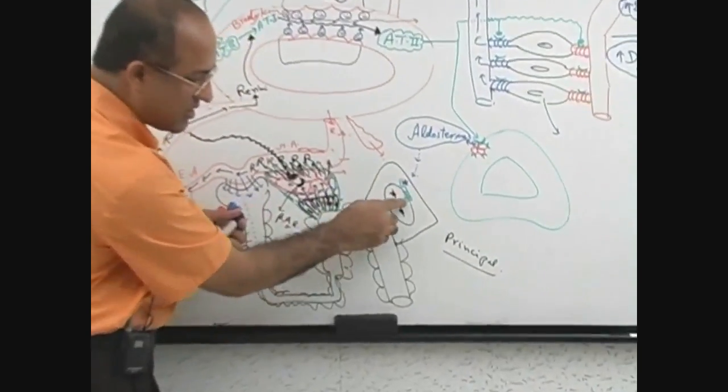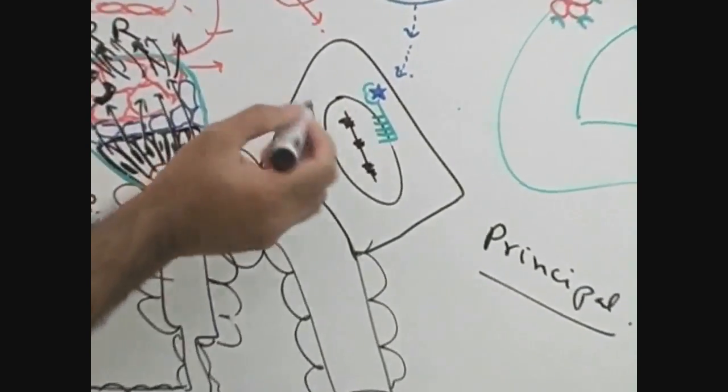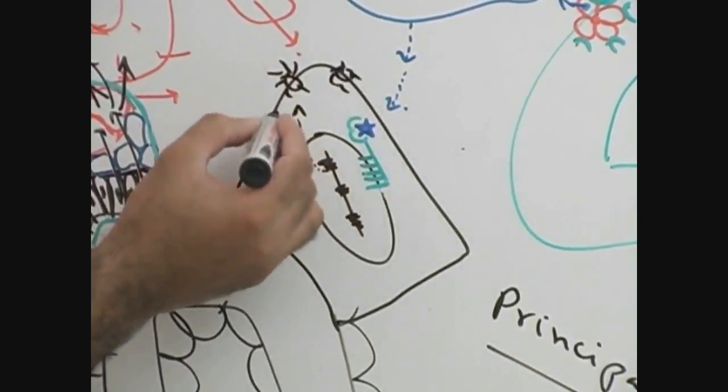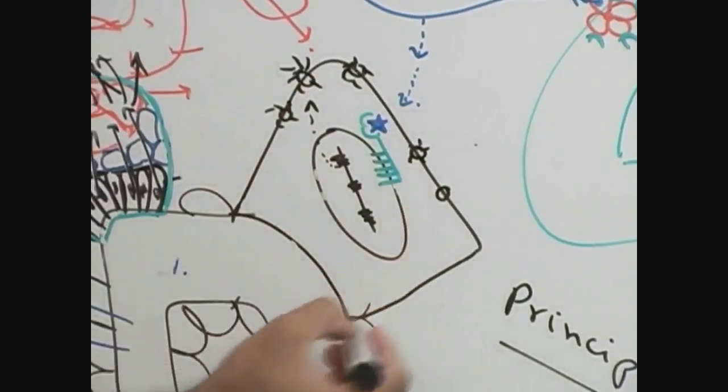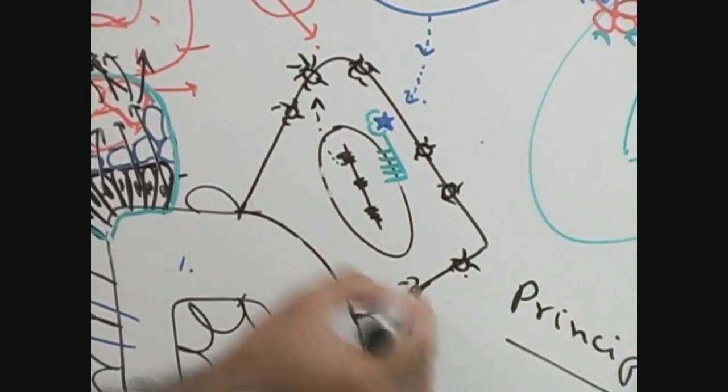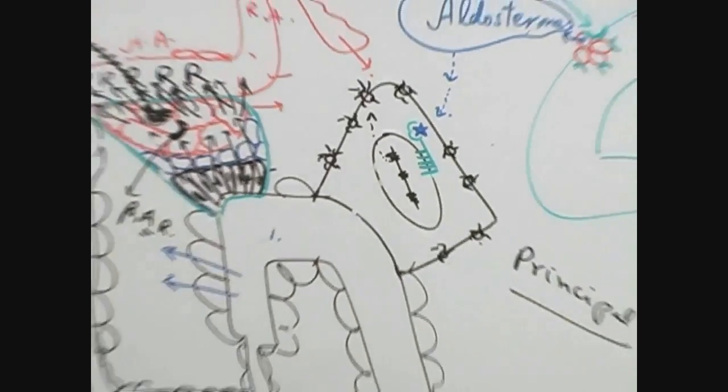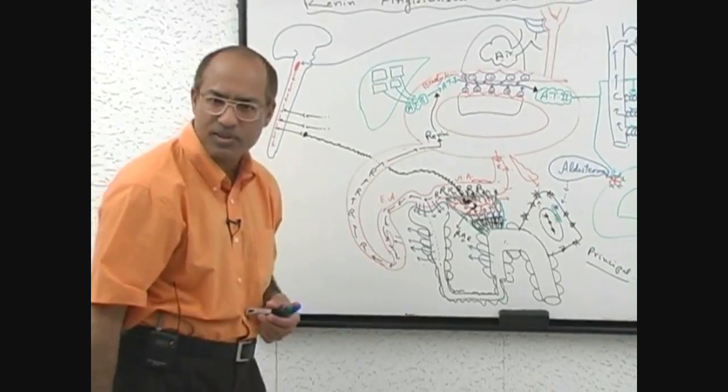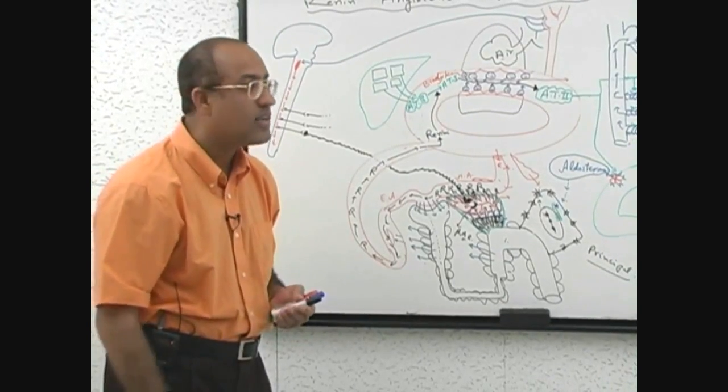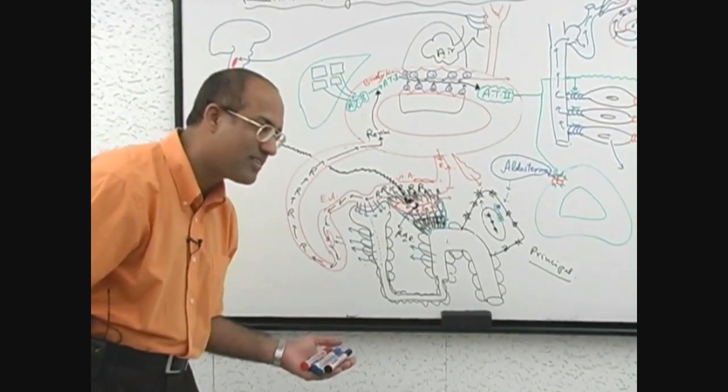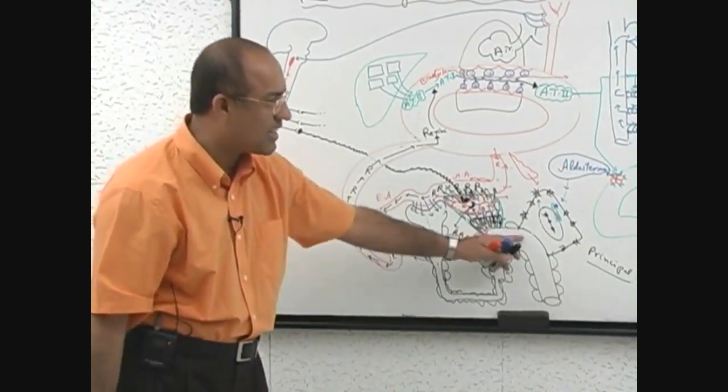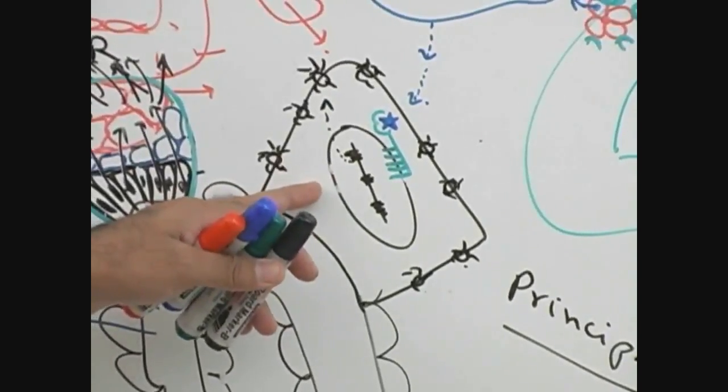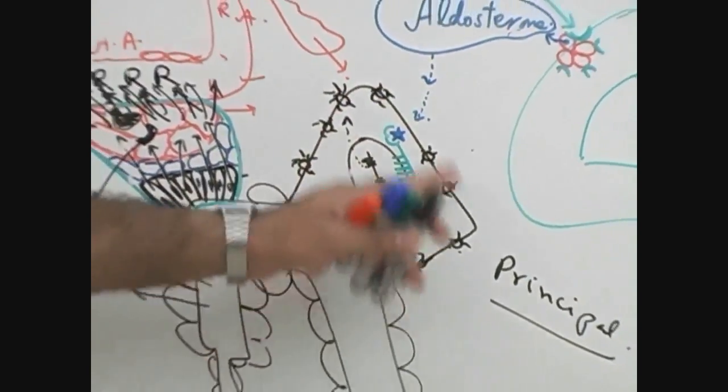When gene number 1 is opened by this aldosterone receptor complex, gene number 1 starts making a special type of protein and that protein is planted into the basolateral membrane. These special proteins are planted into the basolateral membrane of principal cells under the direction of aldosterone. These are sodium-potassium ATPases. They are present in every cell, but in this kidney cell they are present on basolateral membrane. Under the direction of aldosterone, the concentration of sodium-potassium ATPases on the basolateral membrane has been increased.